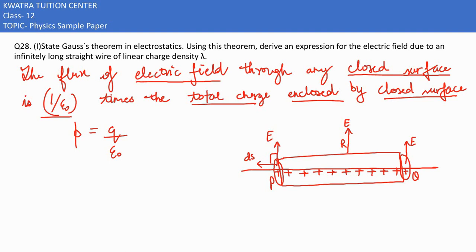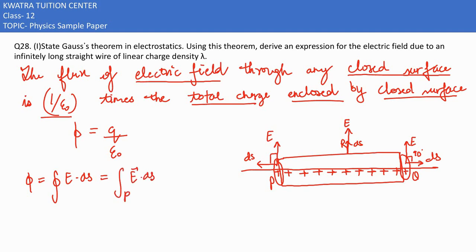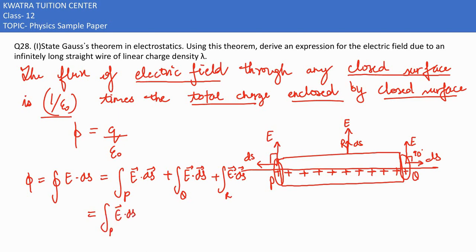At the curved surface around the corner (at R), the angle between E and dS is 0 degrees. At the right-hand side surface, the angle is again 90 degrees. The total flux is φ = ∮ E·dS, which we split into contributions from surfaces P, Q, and R: φ = E·dS(P) + E·dS(Q) + E·dS(R).